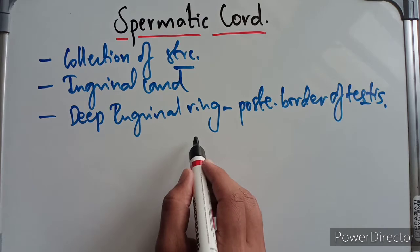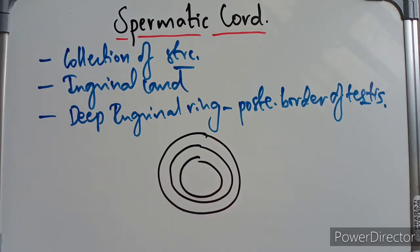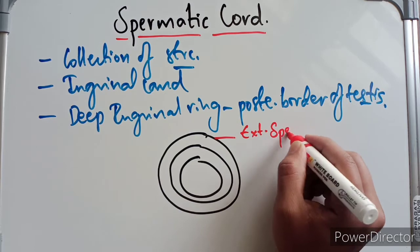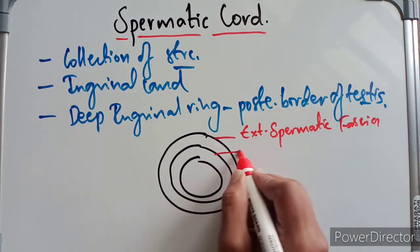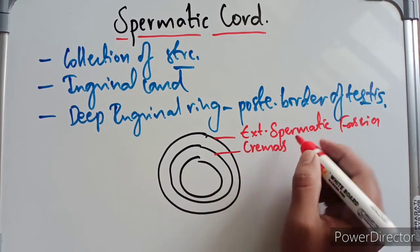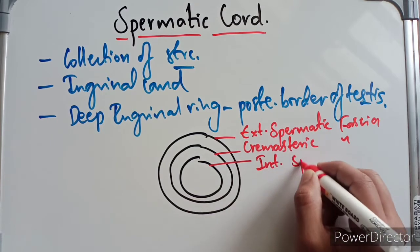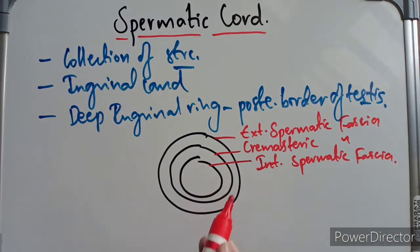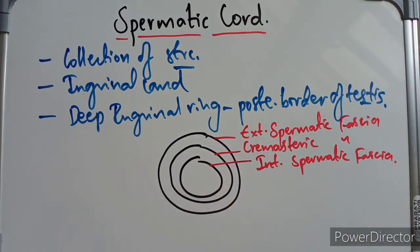To make it easier for you, draw three circles. The outer one is the external spermatic fascia. The middle one is the cremasteric fascia. And the inner one is the internal spermatic fascia. So the three coverings are: external spermatic fascia on the outside, cremasteric fascia in the middle, and internal spermatic fascia on the inside.